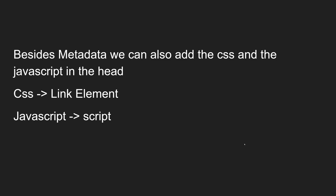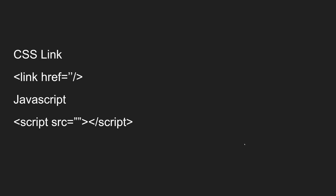Besides metadata, we can also add CSS and JavaScript coding in the head. CSS is added using the link tag - all of you are aware of this - and JavaScript is added using the script element, where we can use the src attribute or directly write the script code. In the head you provide the CSS link as link href= with the source file, and JavaScript as script src= like that.